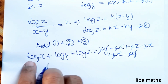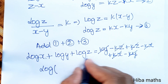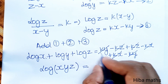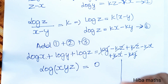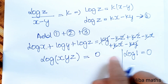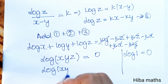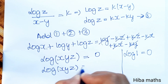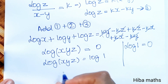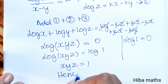So log x + log y + log z = 0, which means log(xyz) = 0. Since log 1 = 0, we have log(xyz) = log 1. Cancelling log on both sides, xyz = 1. This is what we needed to prove.